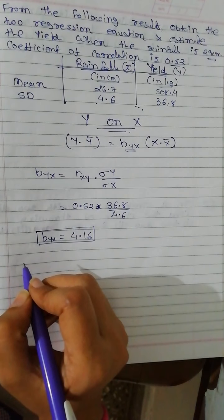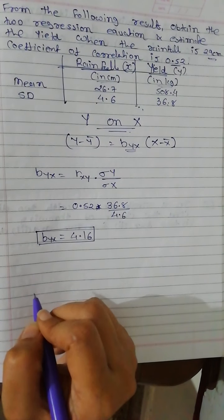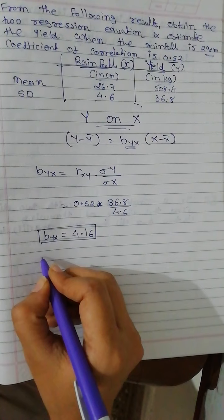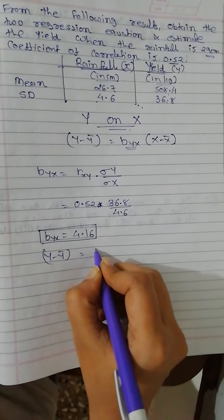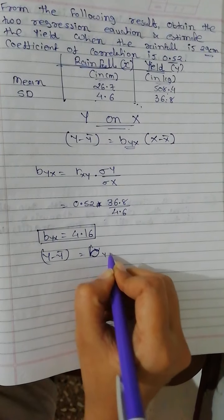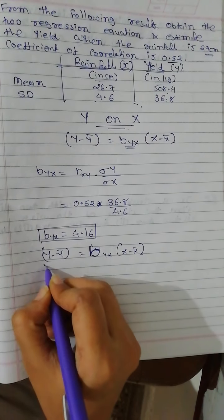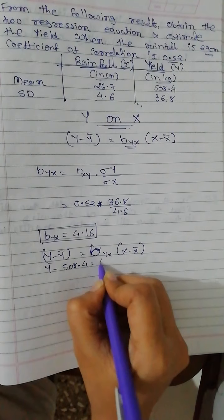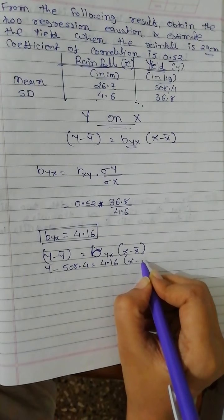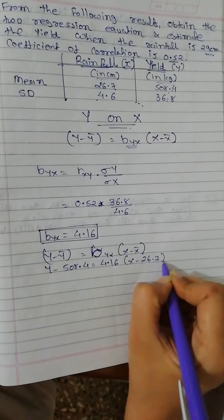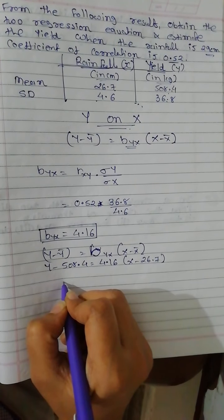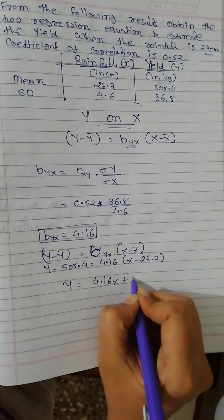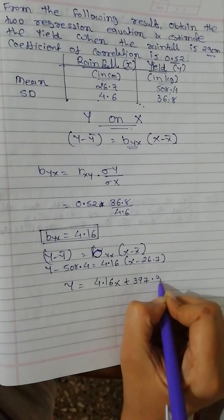So we have now x bar is 26.7 and y bar is this. I will put the formula: y minus y bar equals byx times x minus x bar. So y minus 508.4 equals 4.16 times x minus 26.7. So the equation is y equals 4.16x plus 397.328.